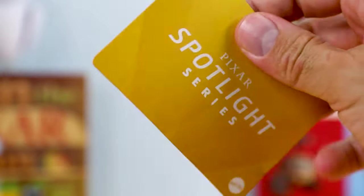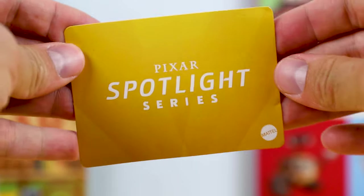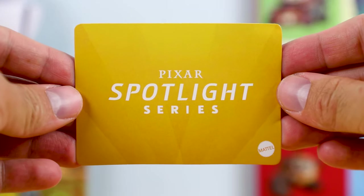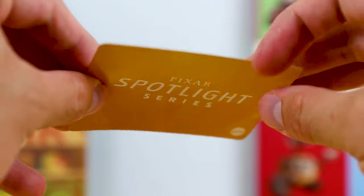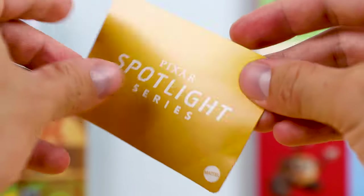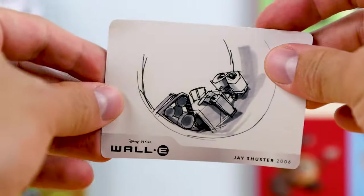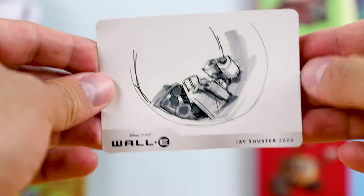Now, before diving into the figure and all the accessories, here's the included Pixar Spotlight Series concept art card. Again, definitely a thinner cardstock material this time compared to Woody's, but either way, here's some classic concept artwork by Jay Shuster of WALL-E just chillin', pondering about life, and once again, I have to note that the date is wrong.